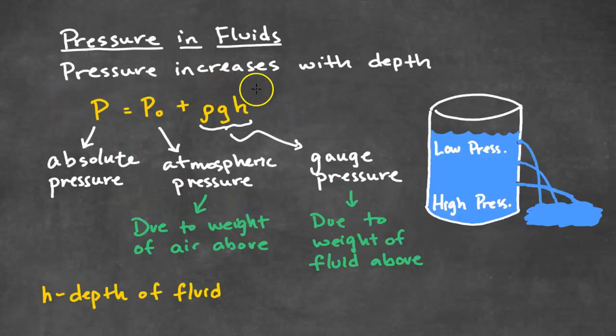Pressure in a fluid increases with depth. And here's an equation that represents this idea. P-naught is the atmospheric pressure. This is the pressure due to the weight of air above. Rho GH is the gauge pressure. This is due to the weight of the fluid above. And P represents the absolute pressure, which equals the atmospheric pressure plus the gauge pressure. And the H represents the depth of the fluid.